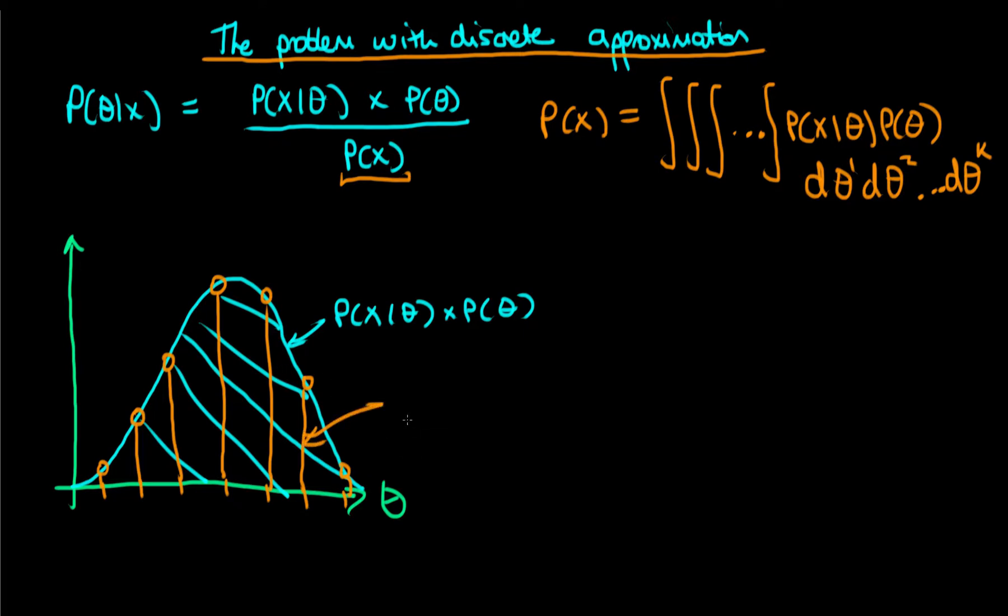And if we do so we end up with a discrete distribution which looks something like the orange thing that I'm drawing here, the orange graph. How then could we work out the denominator term for our orange graph? Well that's quite simple. Because it's a discrete case now then what we need to do is we need to sum p of x given theta i times p of theta i.